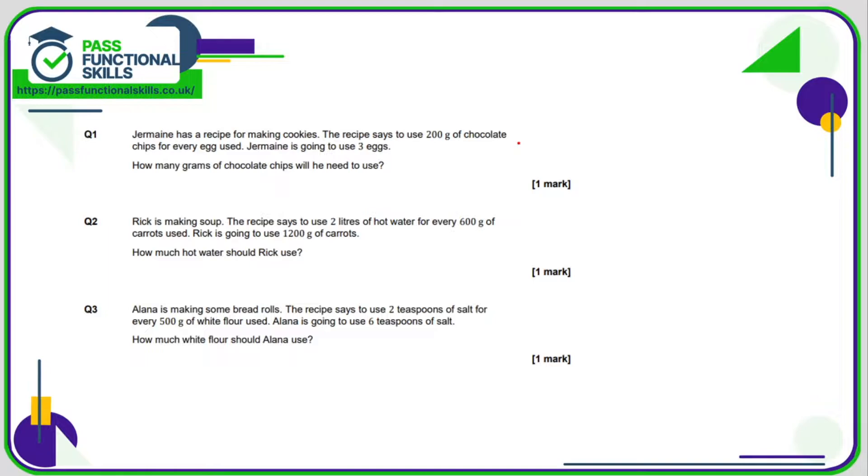So Jermaine's got a recipe for making cookies. The recipe says to use 200 grams of chocolate chips for every egg used. So 200 grams of chocolate is for one egg. If Jermaine is using three eggs, he's tripled the number of eggs, so he needs to triple the chocolate as well, and three times 200 is 600.